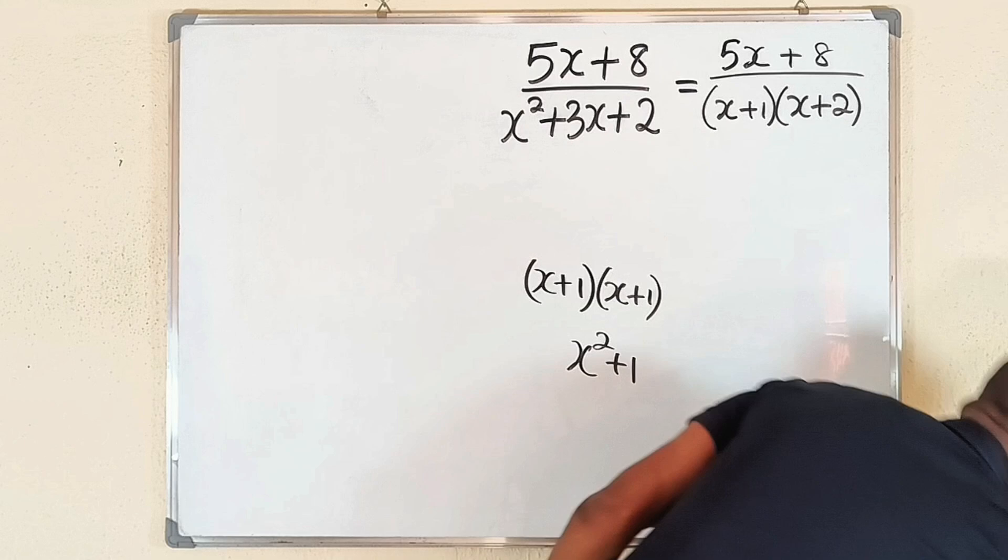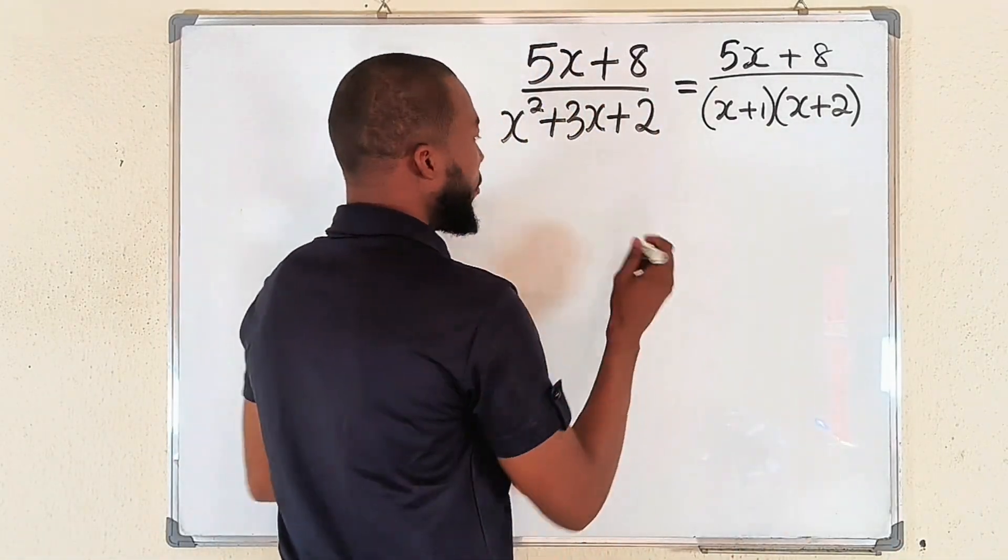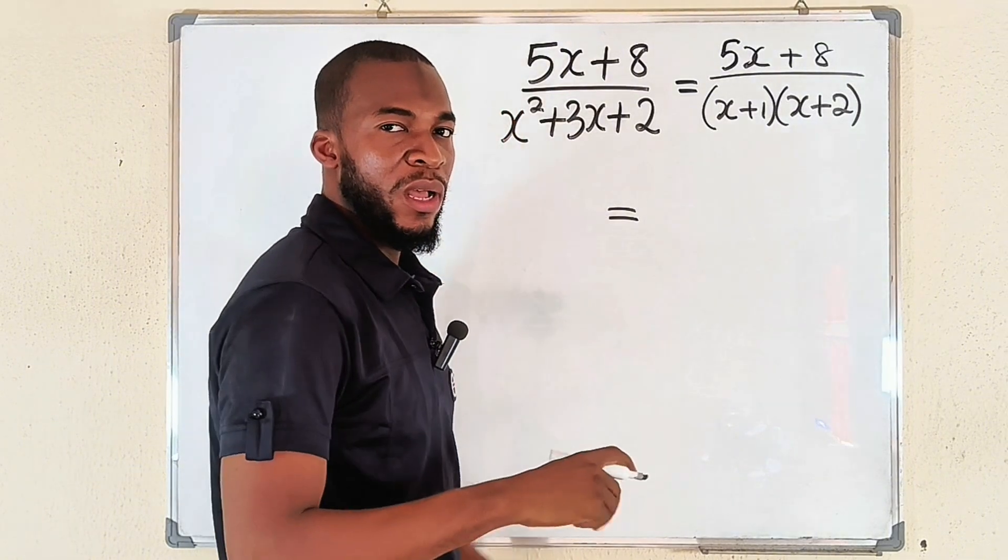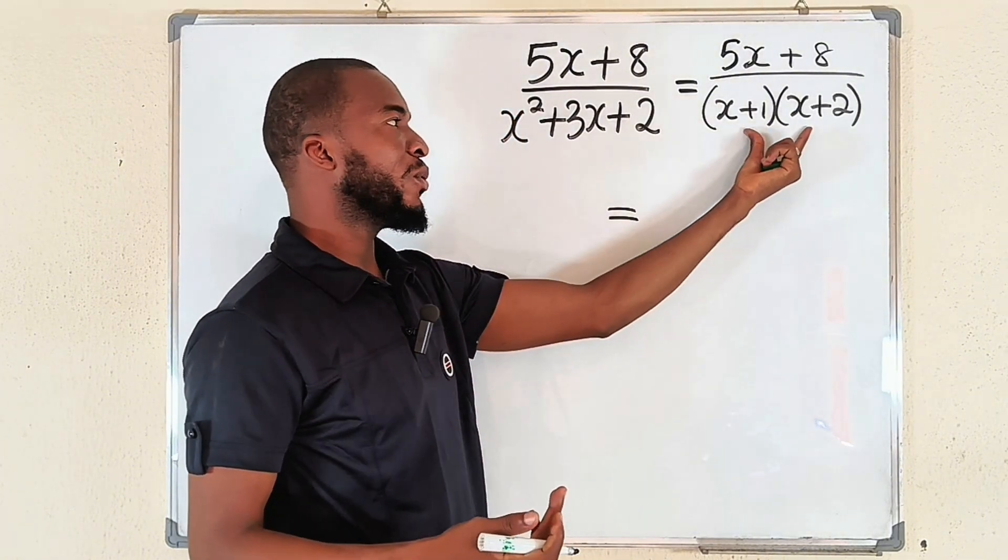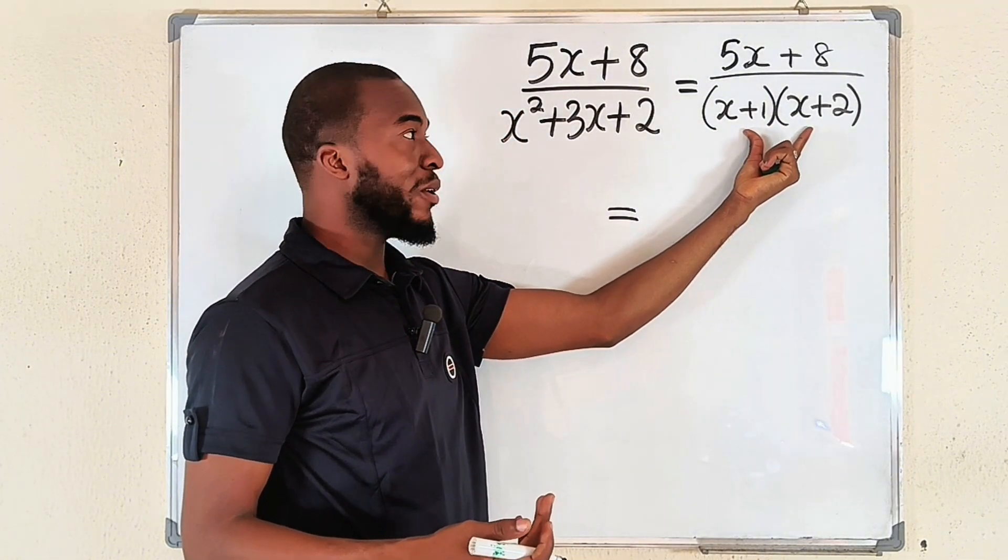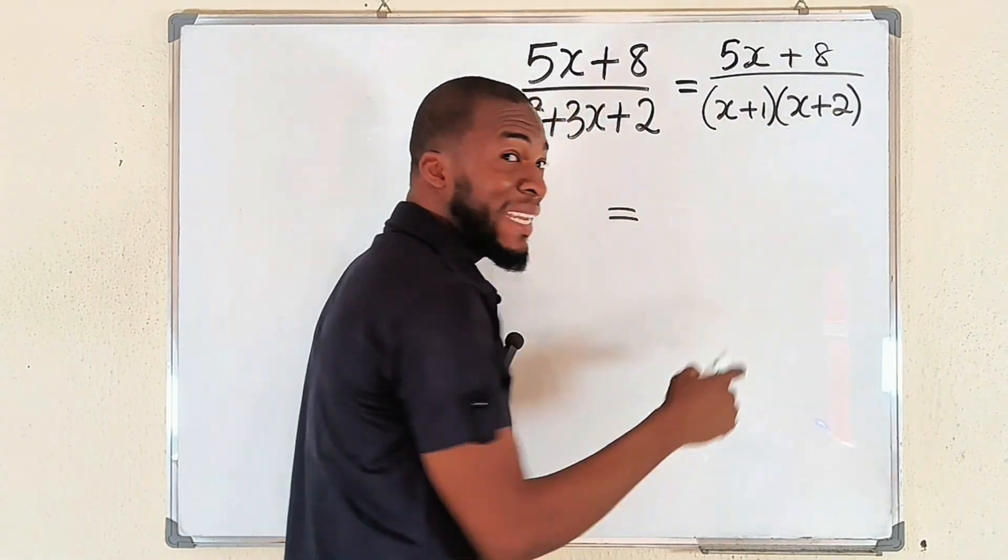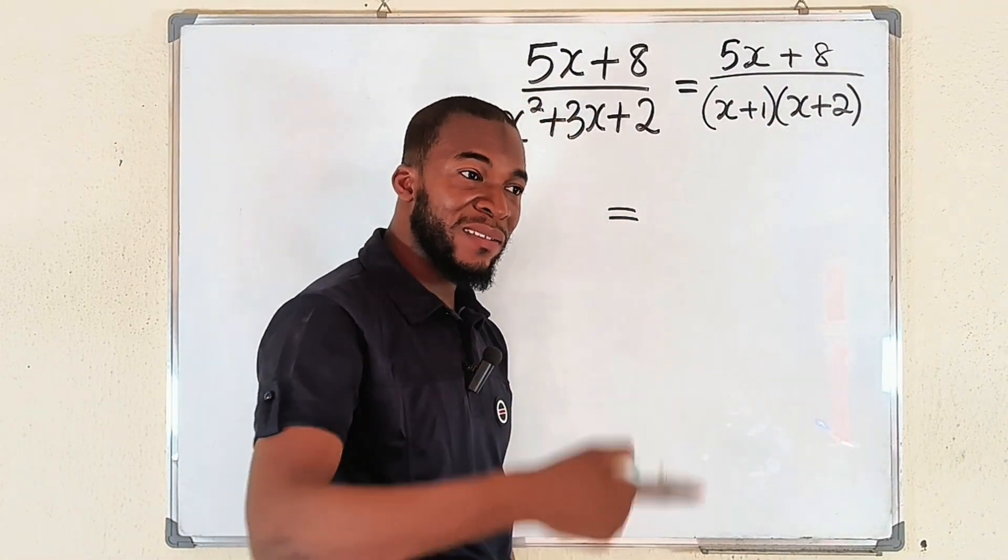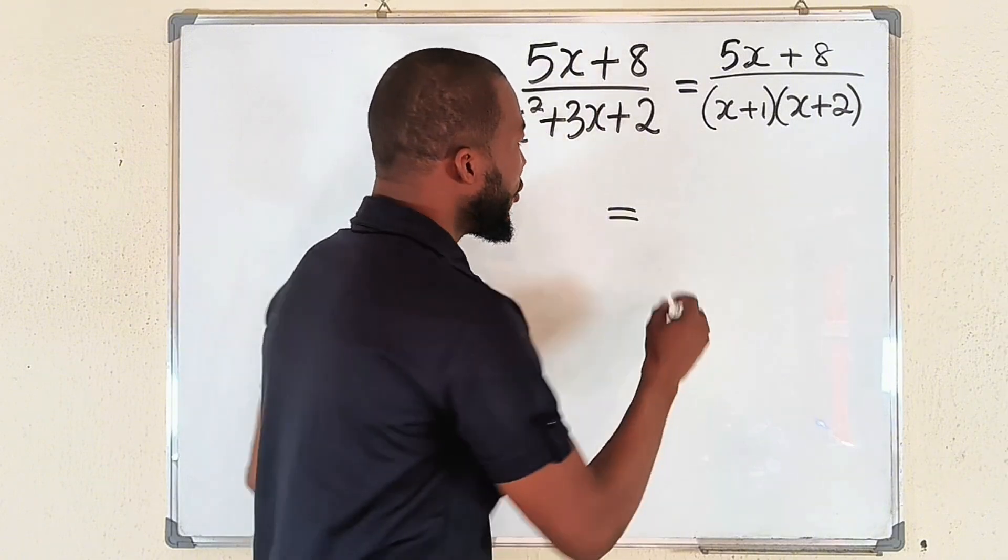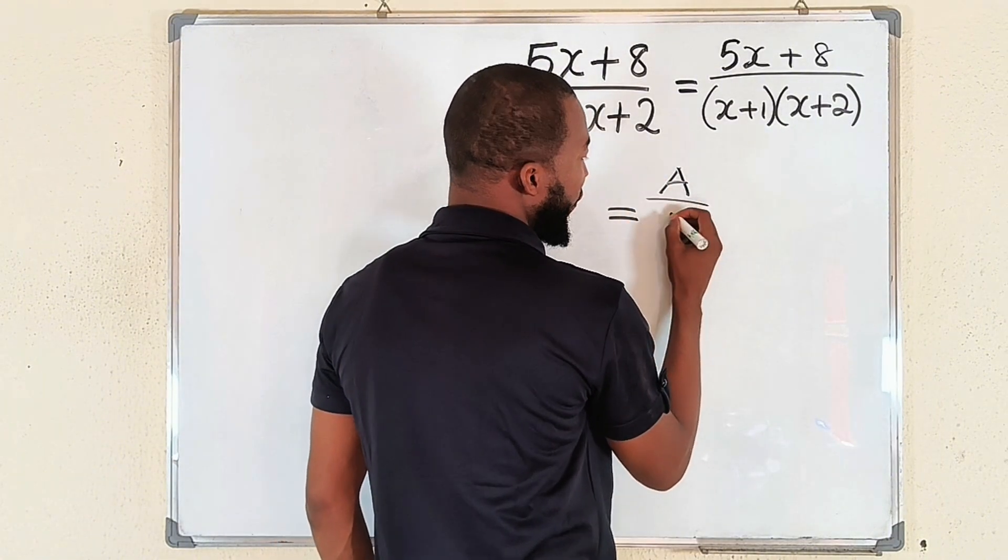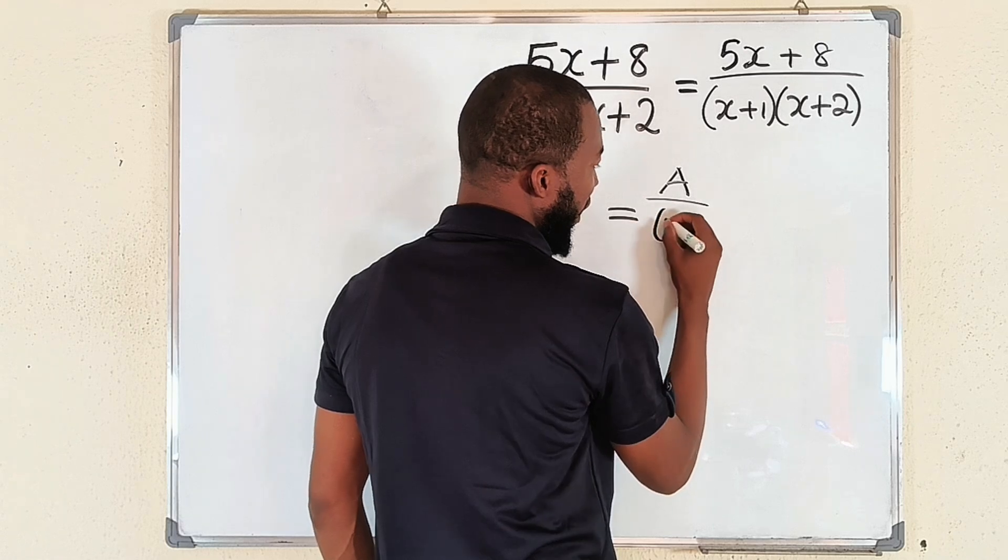Remember, to resolve any compound fraction into partial fractions, you have to always consider the degree of the denominators. All of these are linear. One degree less than linear will be a constant. So we're going to have a constant, a particular constant A, divided by the first factor which is (x+1).